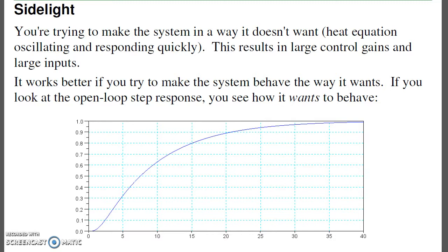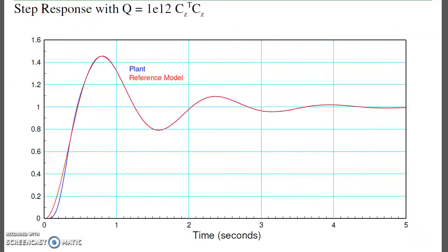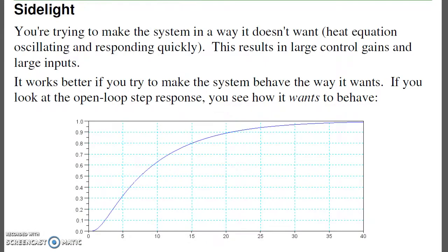If I look at the open-loop system, the heat equation behaves like this. I have a four-stage RC filter, the settling time is about 40 seconds, no overshoot. I'm trying to take a system which behaves like the heat equation, doesn't want to oscillate, wants to take 40 seconds, and try to force it to behave like a system that's underdamped, settling out in four seconds. If you completely ignore how the system wants to behave, you can do it, but it's going to take a lot of control effort.